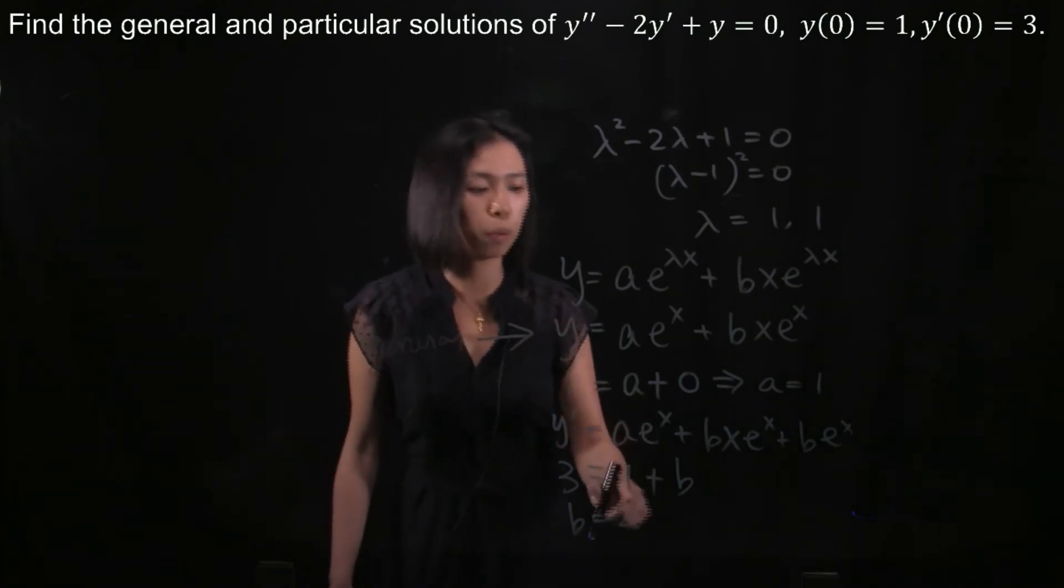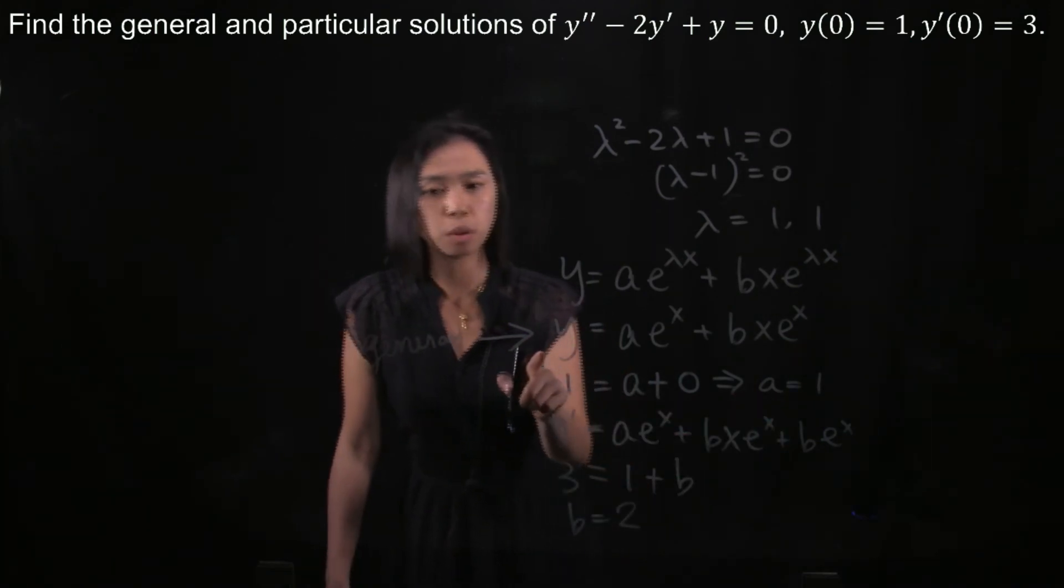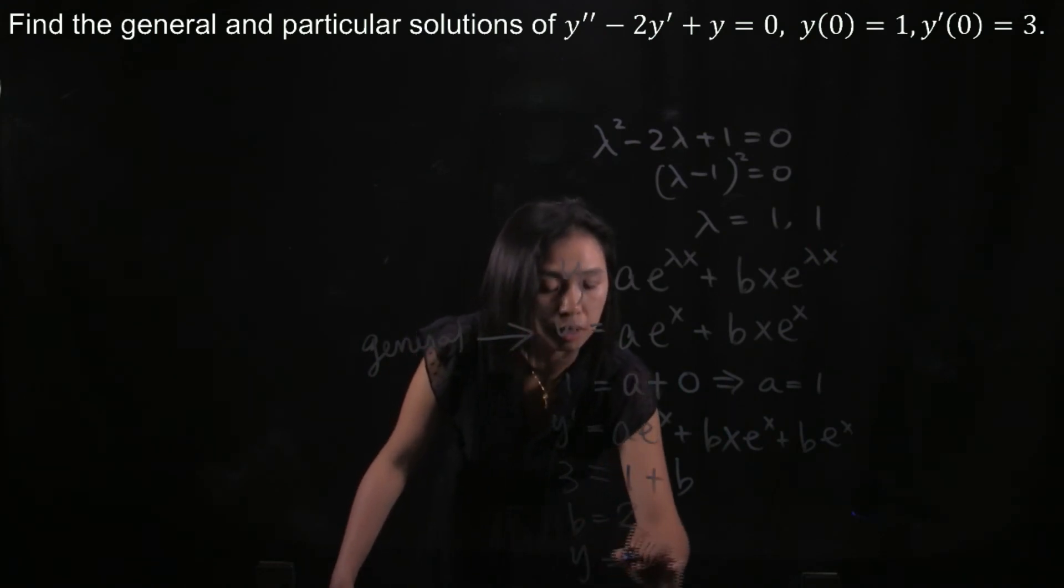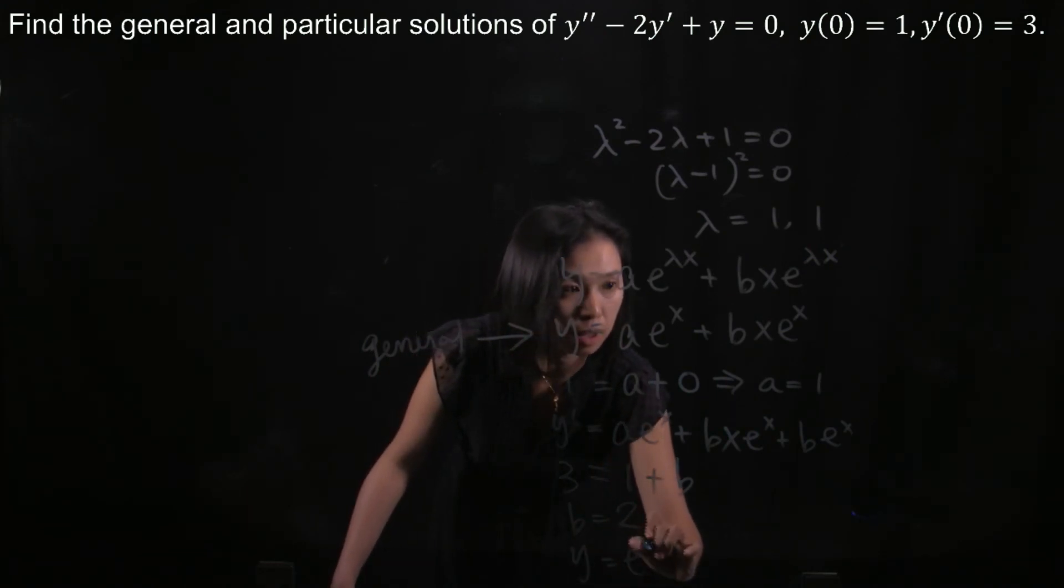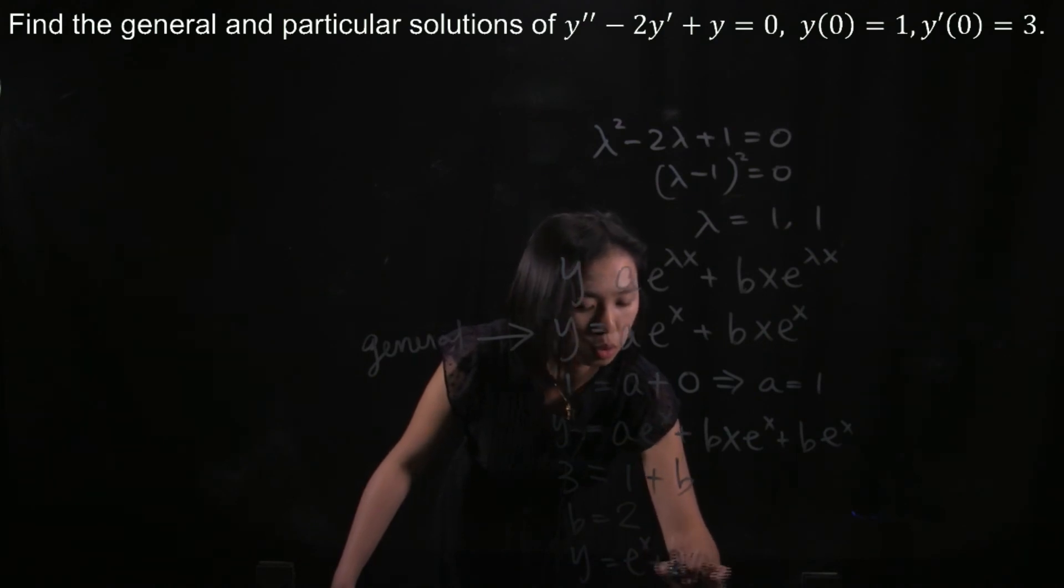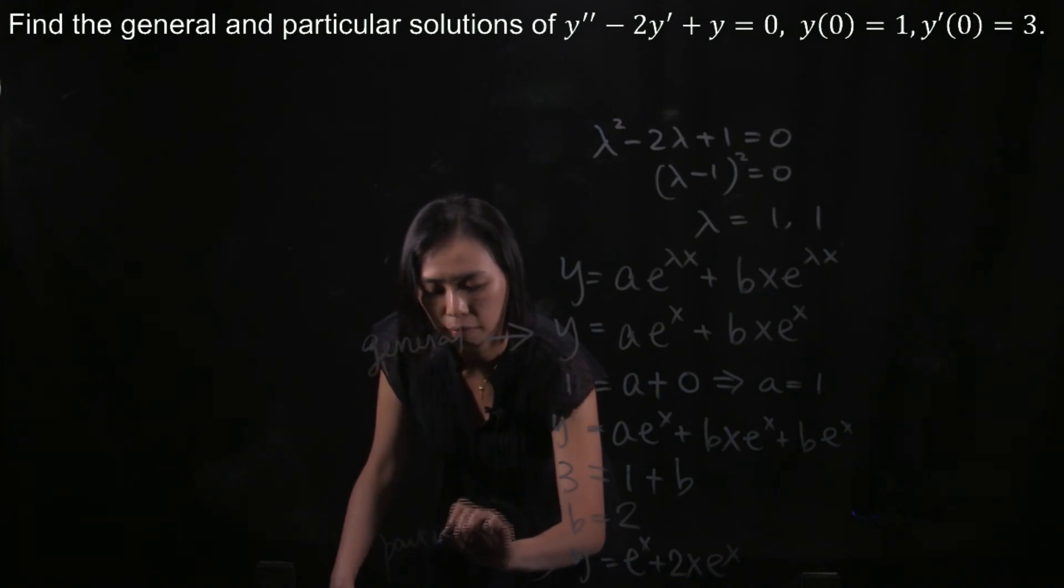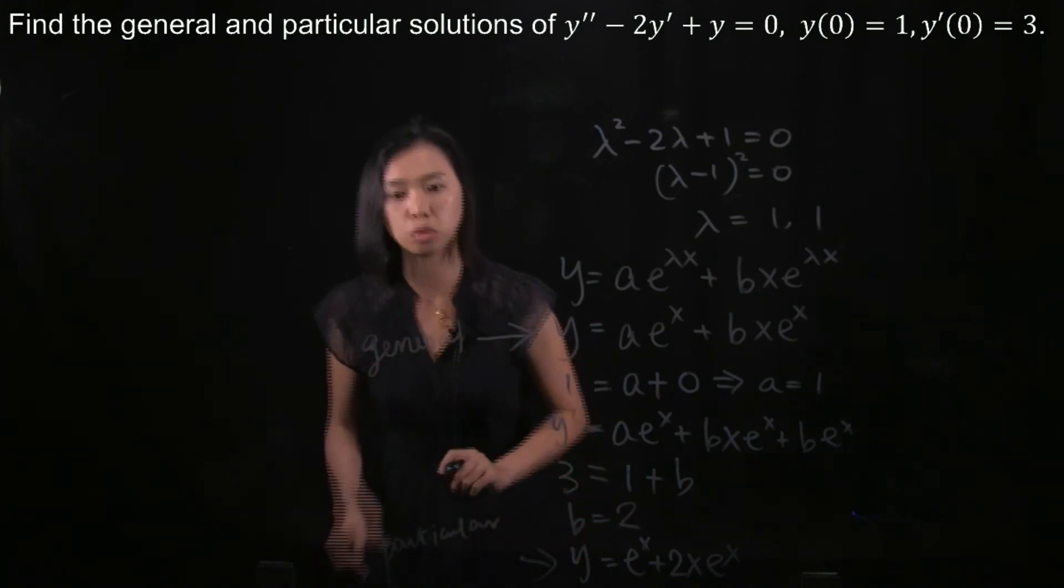You can substitute your a to be 1 and b to be 2, substitute back to the general solution. Then you will have y is e^x plus 2x e^x. And this would be your particular solution.